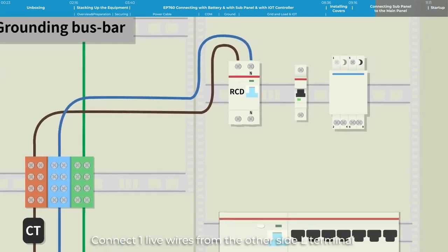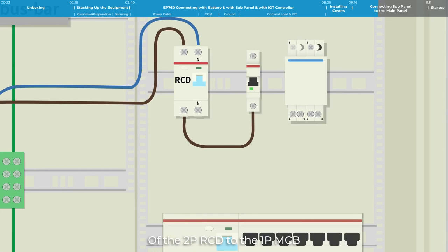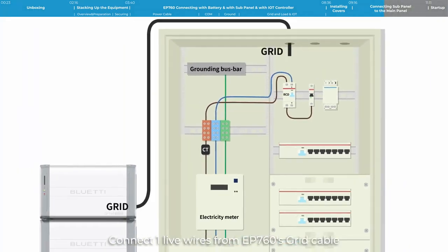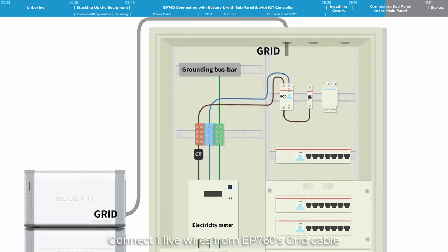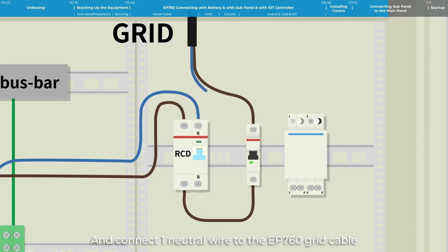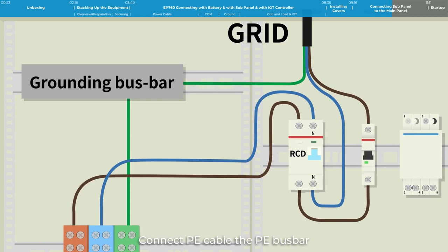Connect one live wire from the other side L terminal of the 2P RCD to the 1P MCB, miniature circuit breaker terminal. The sequence from left to right is L N. Connect one live wire from EP760's grid cable to the other side of the 1P MCB, and connect one neutral wire to the EP760 grid cable. Connect PE cable to the PE bus bar.